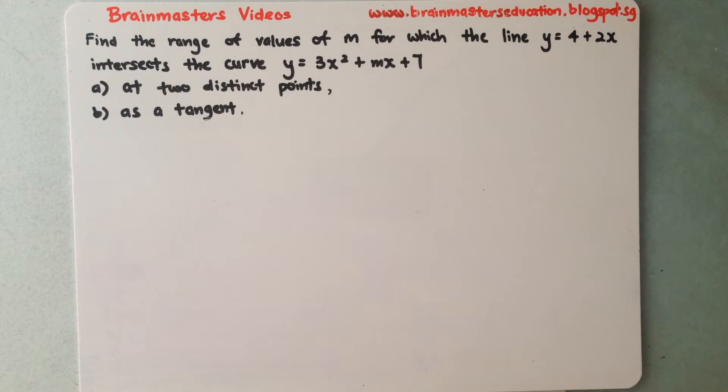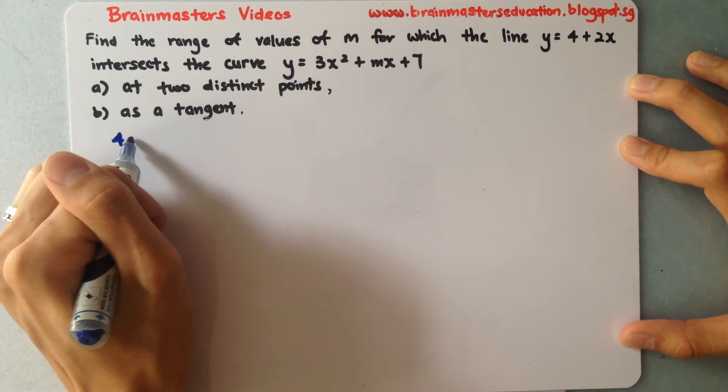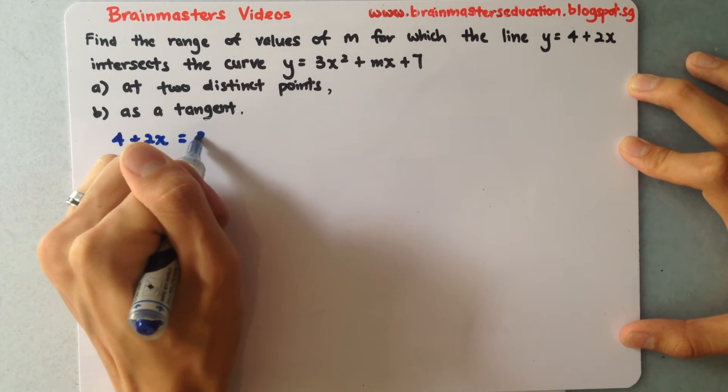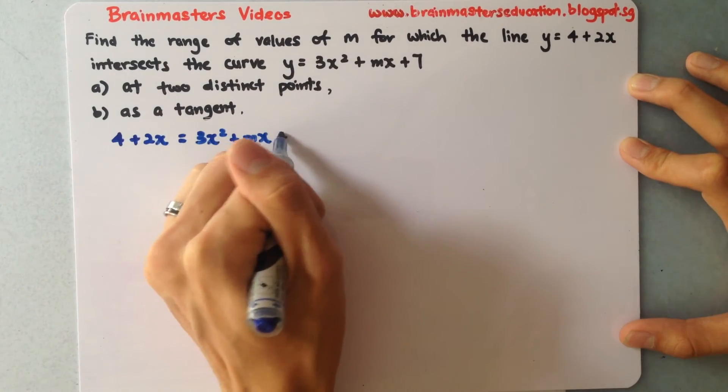Whenever you're given two equations, equate them to each other first. So I have 4 + 2x = 3x² + mx + 7.